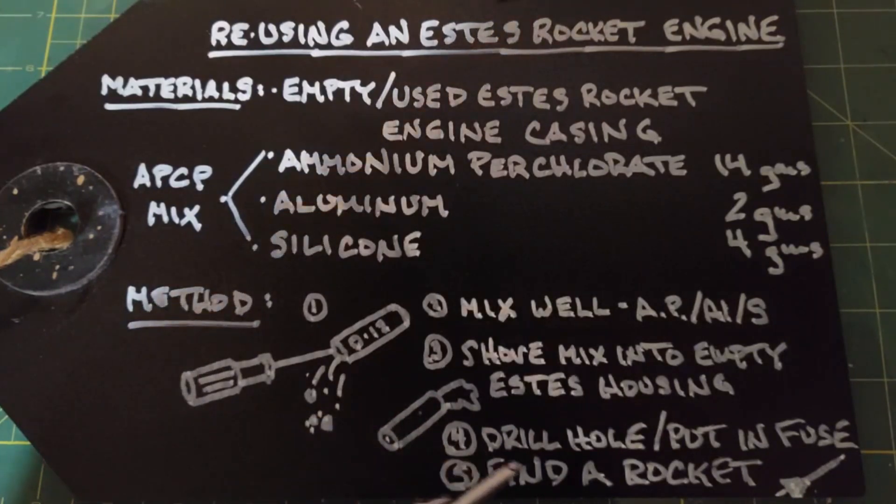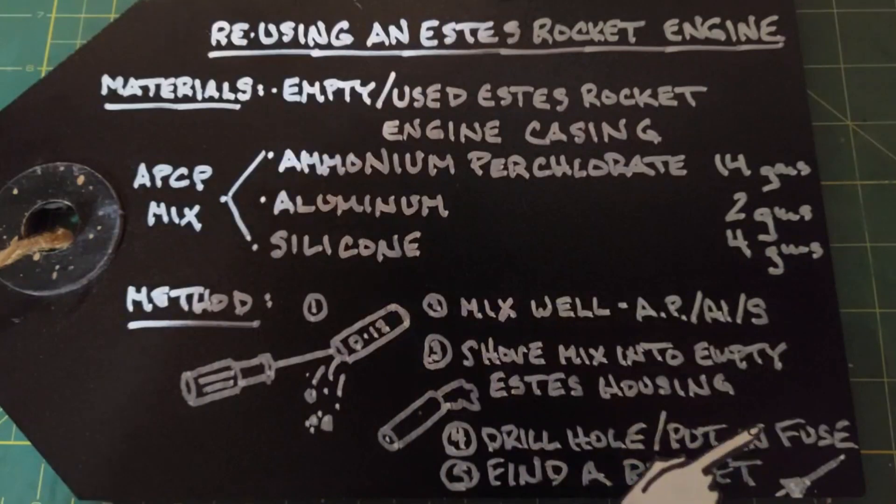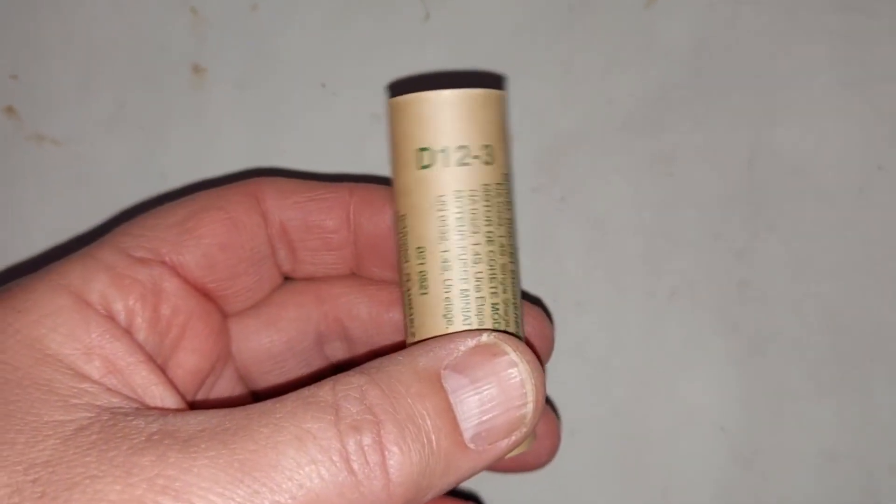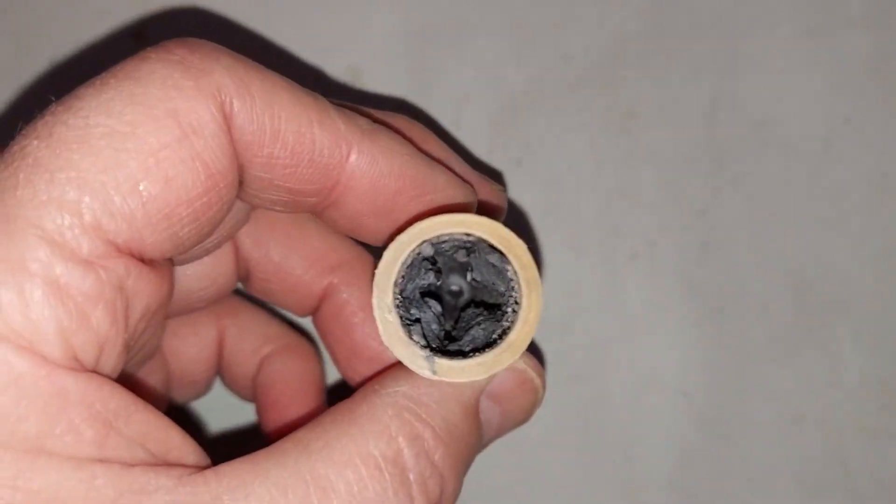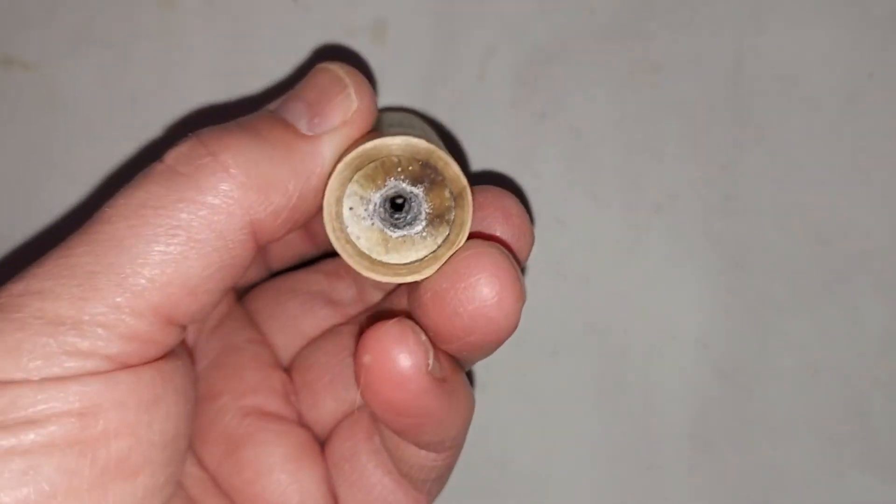Now that we have a rocket engine we need to find a rocket to put it in. This is all pretty simple. This is an Estes D12-3, obviously, but it's used and you can see all the crap that's in there.